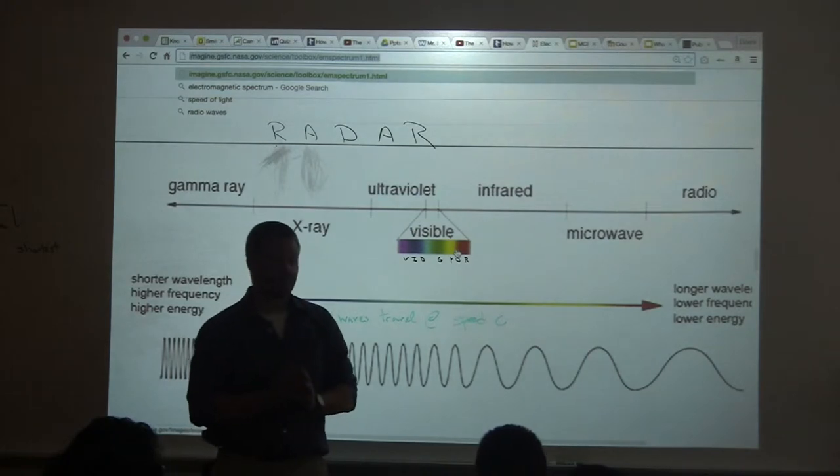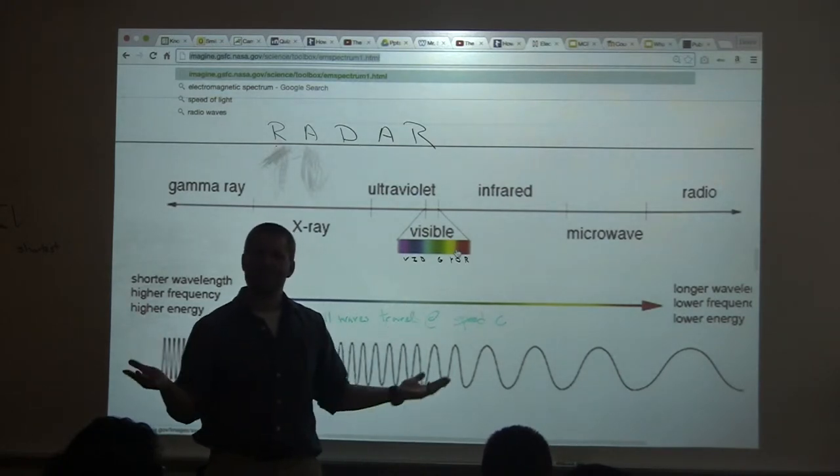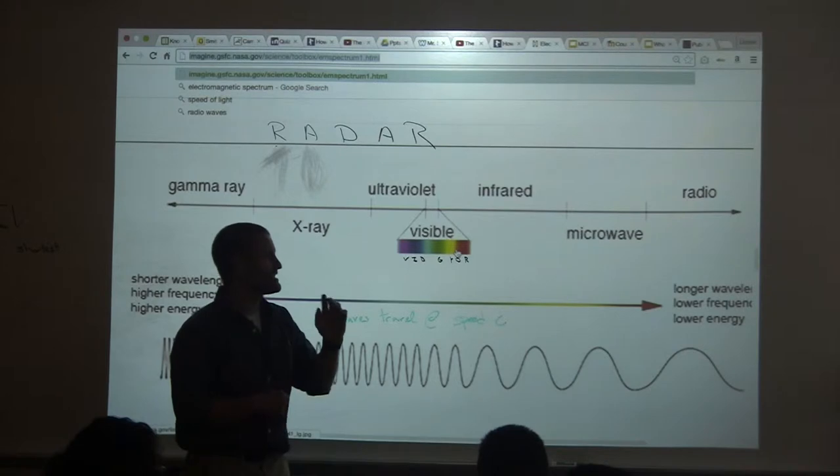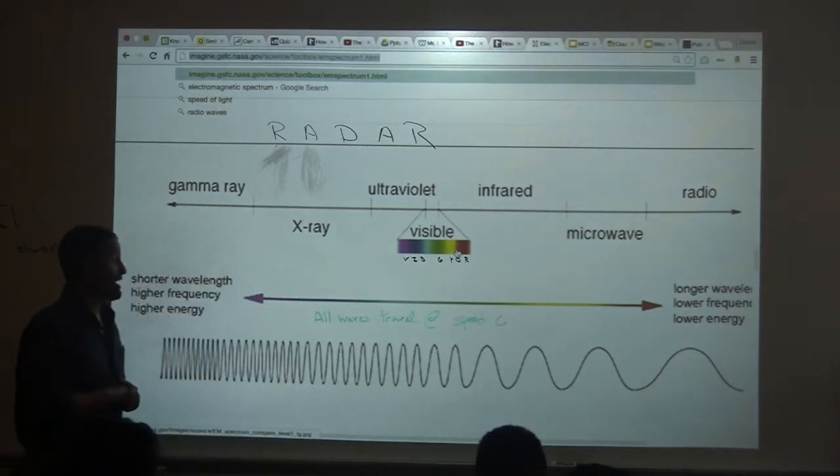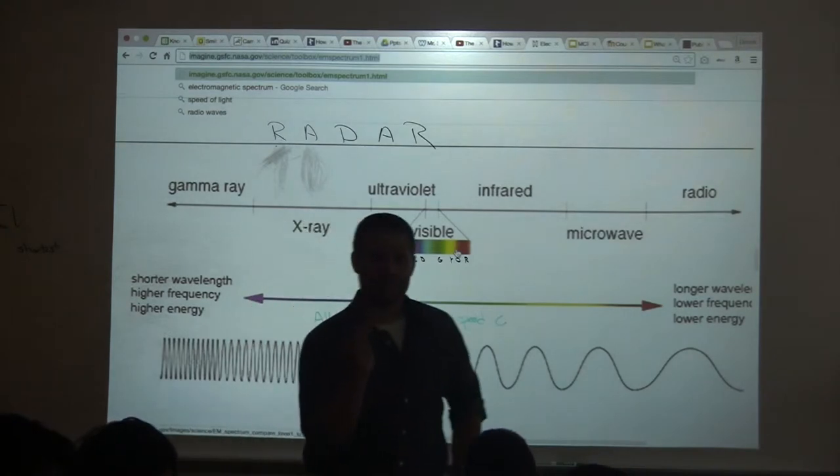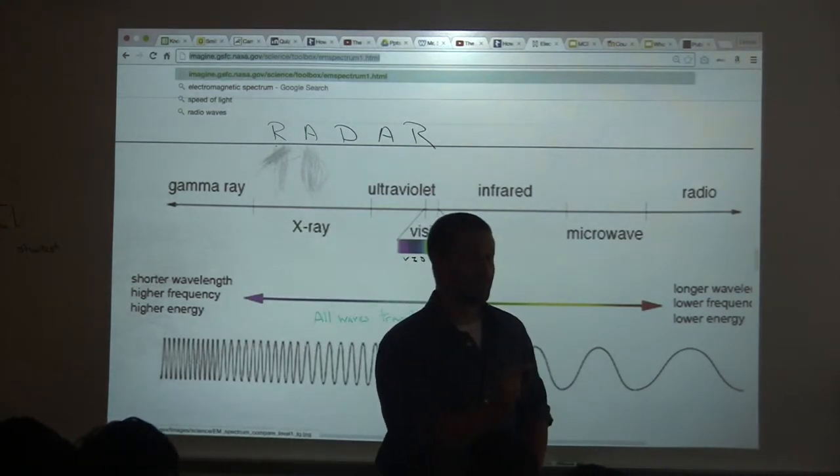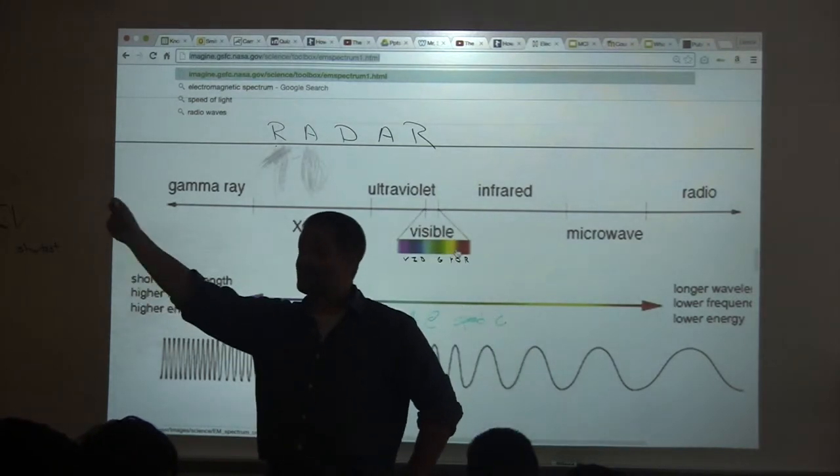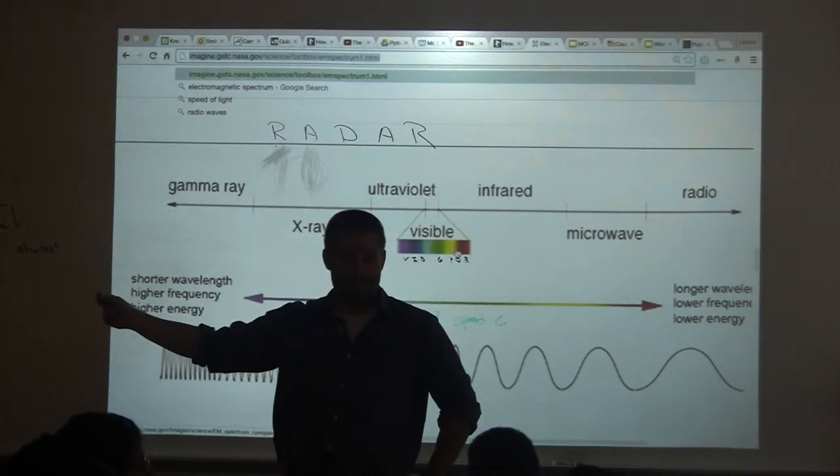What a radar does, and we're going to be using similar ideas to radar today, it sends out a wave. All waves travel at speed C. Does anybody know what C is? All these waves travel at the same speed. You know what that speed is? Speed of light. That's what C stands for in mathematics and in physics. The speed of light. That's the cosmic speed limit. Scientists have not found anything that travels faster than the speed of light yet.